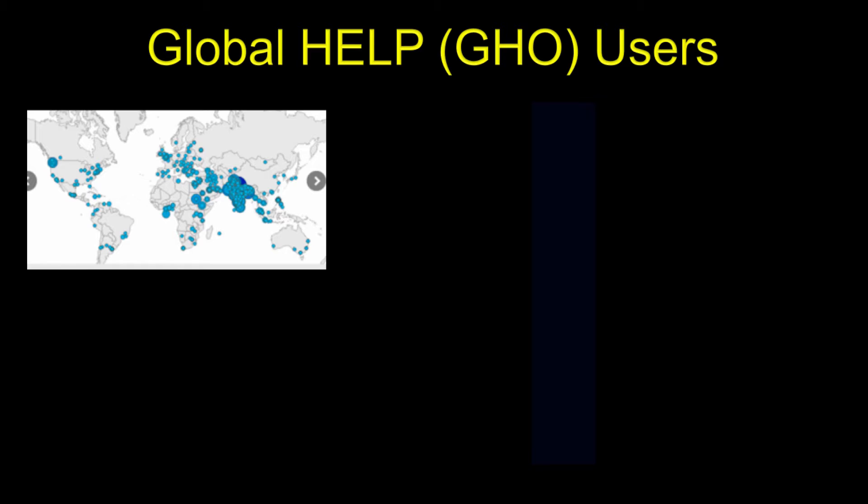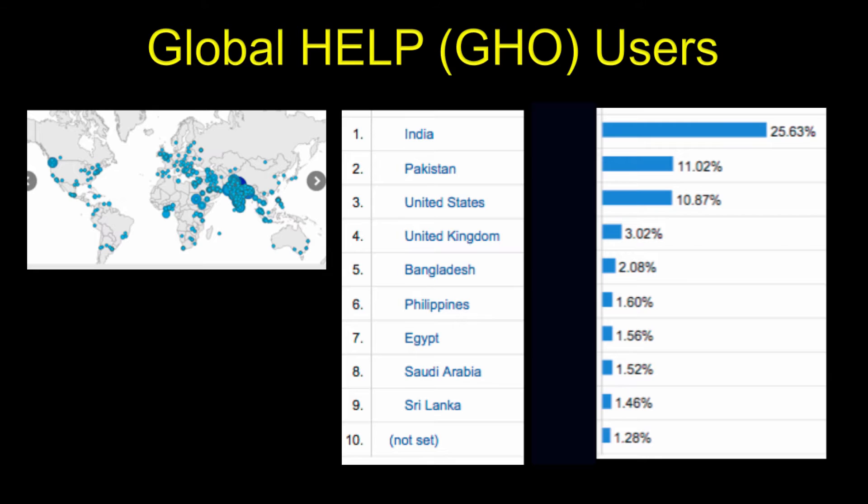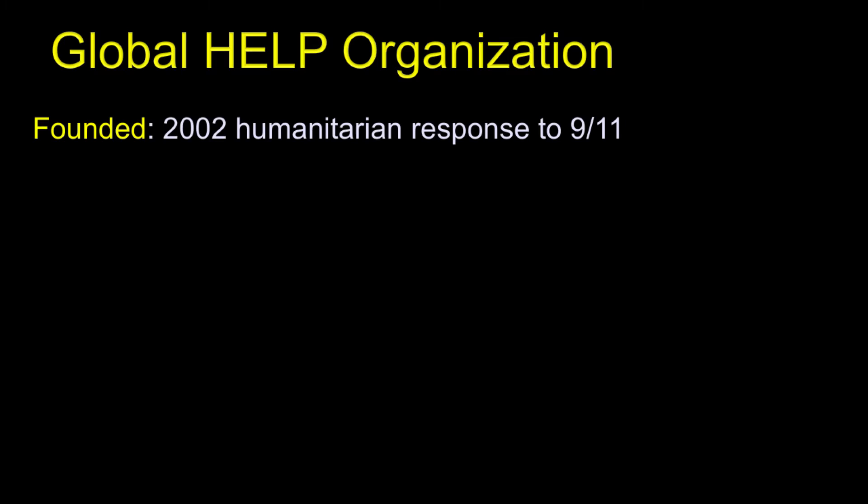Global Health Organization, sometimes referred to as GHO, users are from around the world. Nearly 200 countries are represented, and it's interesting that India is by far the most common country that uses our material, nearly a quarter of all materials downloaded. This is very important and why I wanted to come and participate in your program.